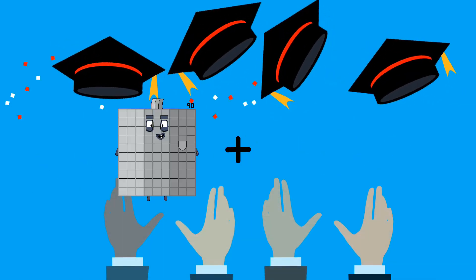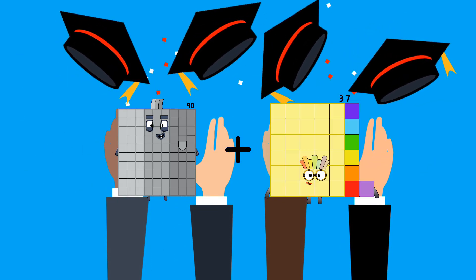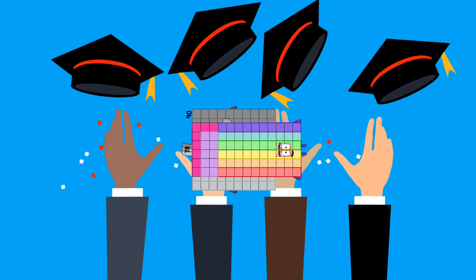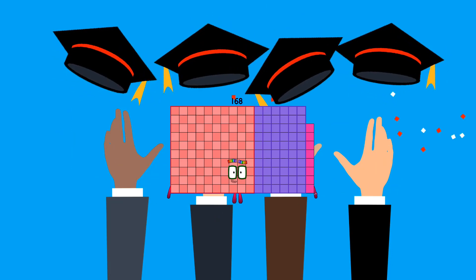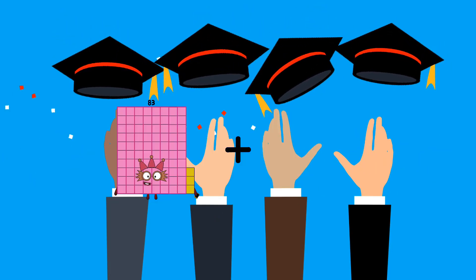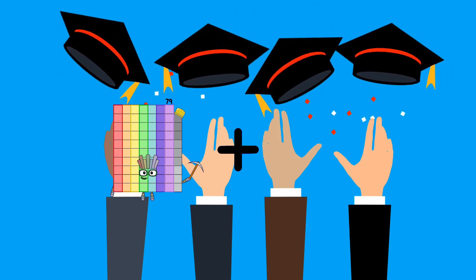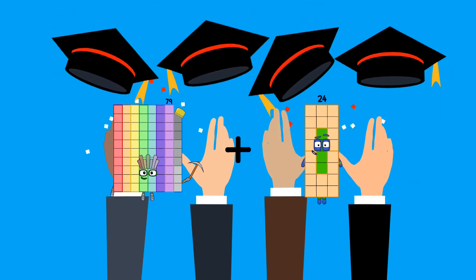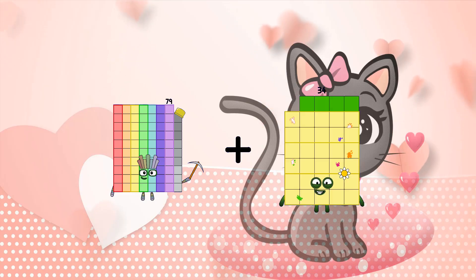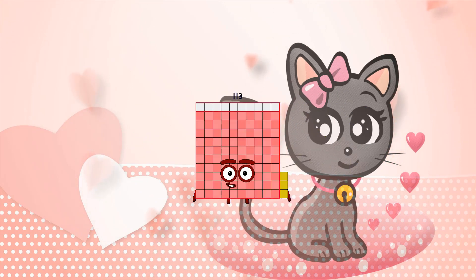90 plus 78 equals 168. 79 plus 34 equals 113.